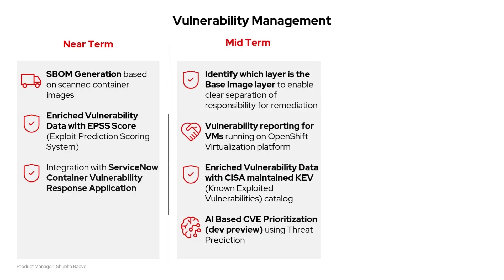Onto the mid-term goals: we want to identify base image layers and help teams know who is responsible for fixing images. Next, vulnerability reporting for virtual machines on OpenShift — this adds security for virtual machine workloads as ACS scans vulnerabilities for both virtual machines and containers. We'll also enrich vulnerability data with the CISA-maintained Known Exploited Vulnerabilities Catalog, or KEV, which prioritizes fixing vulnerabilities already being actively exploited. ACS will use the CISA KEV Catalog for real-time updates on active threats. Lastly, AI-based CVE prioritization: ACS will generate an exploit score using an explainable AI threat prediction model, helping customers with remediation prioritization.